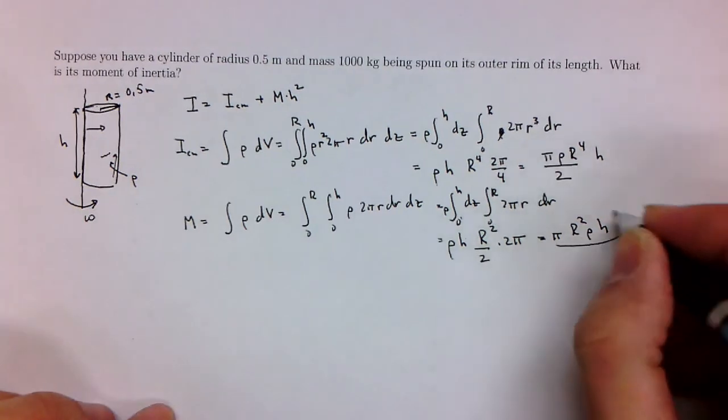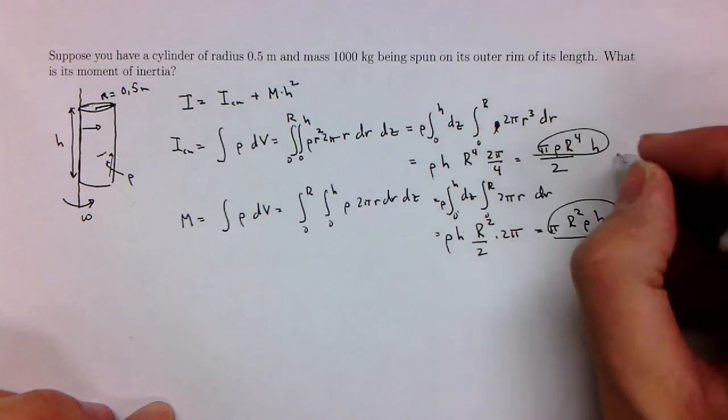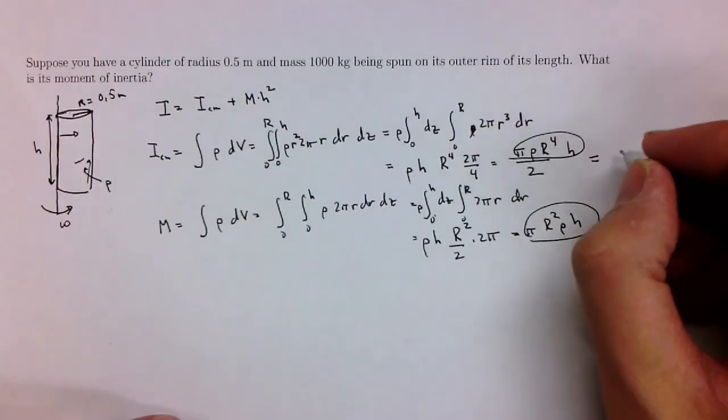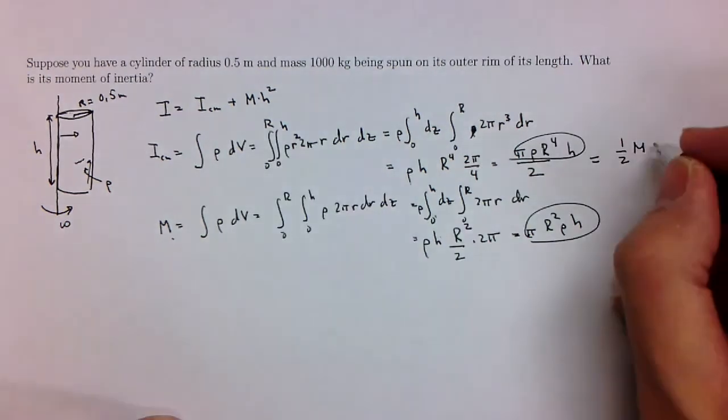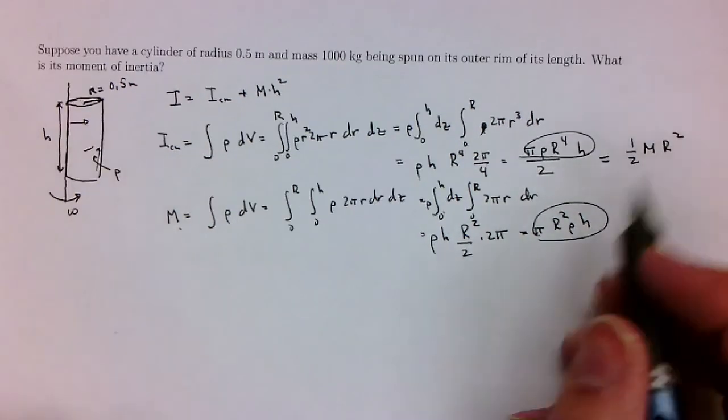So now I look at this and I look at this, and this can be rewritten as 1 half m R squared, which is a result we knew already. We should look at the table, but this is a way of deriving it.